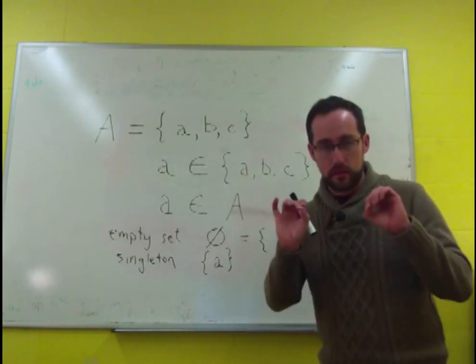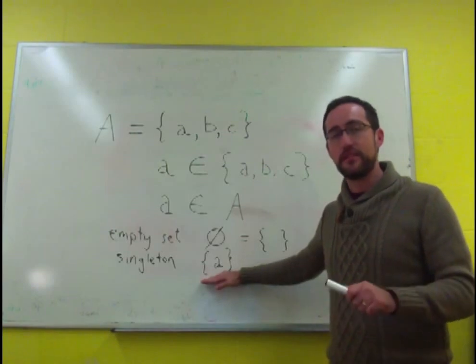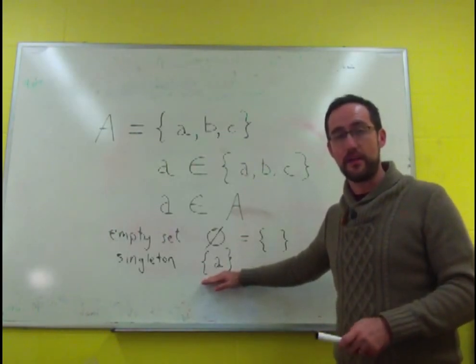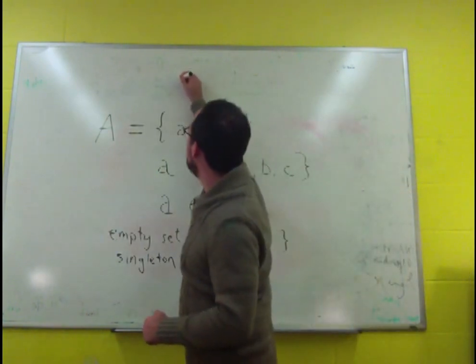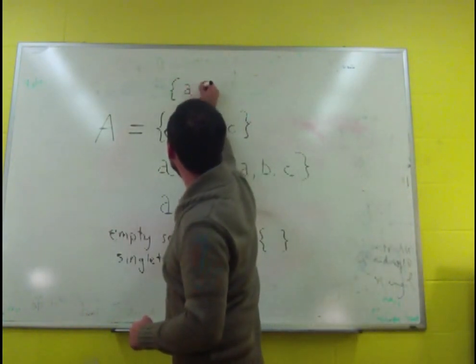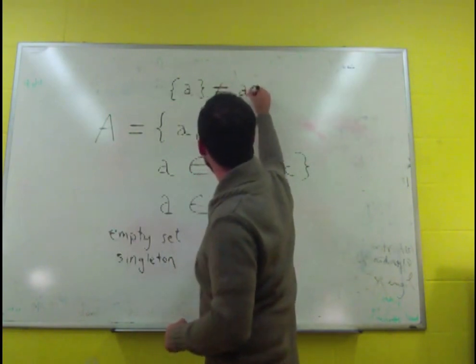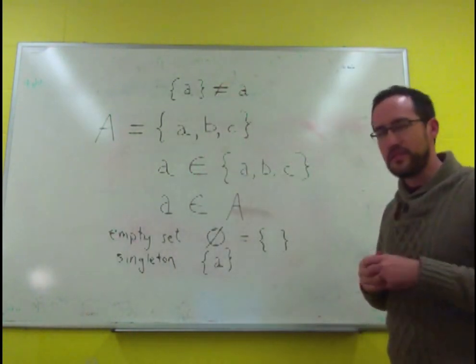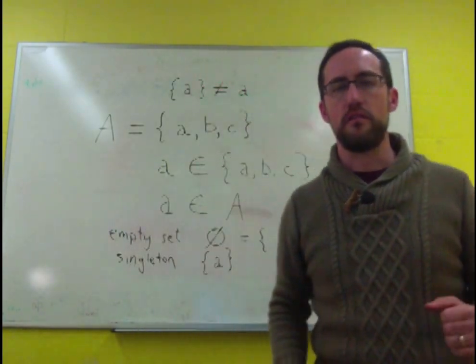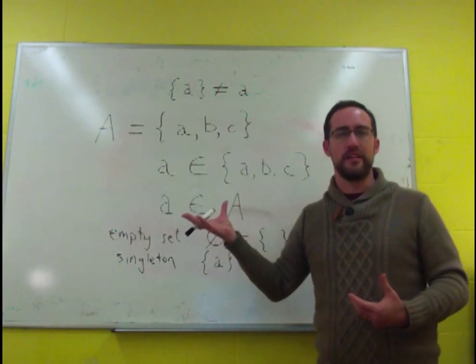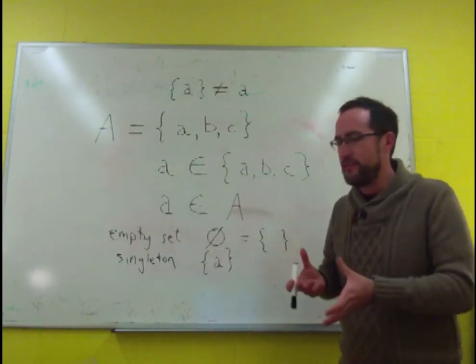And one thing to always keep clear though, is that the set containing A is not the same thing as A. So I'll put that up here. The set containing an object is not the same thing as its object. There's a slightly similar feel to that, to what we talked about in an earlier lecture about how the linguistic expression is not the same thing as the object.